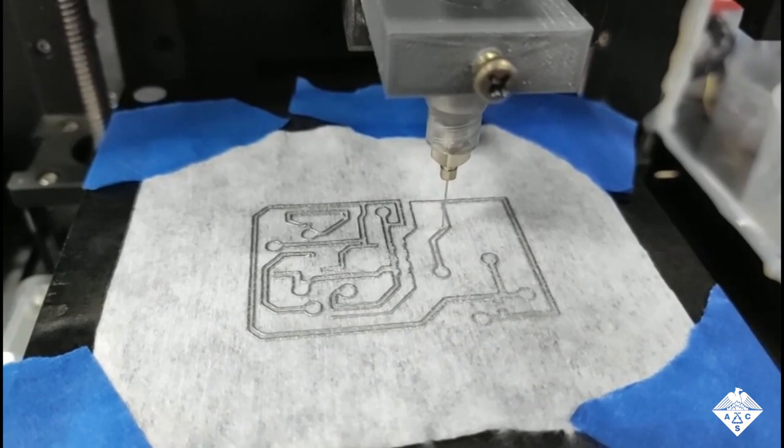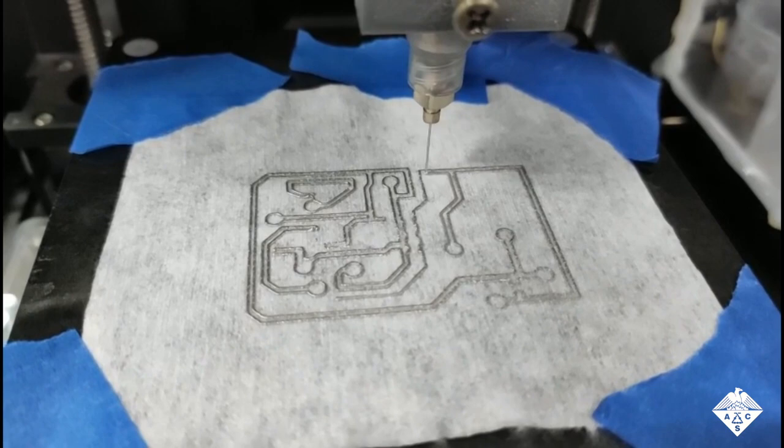The team 3D printed the new ink onto a variety of surfaces, including paper, polyester fabrics, non-woven fabrics, and acrylic-based tape.